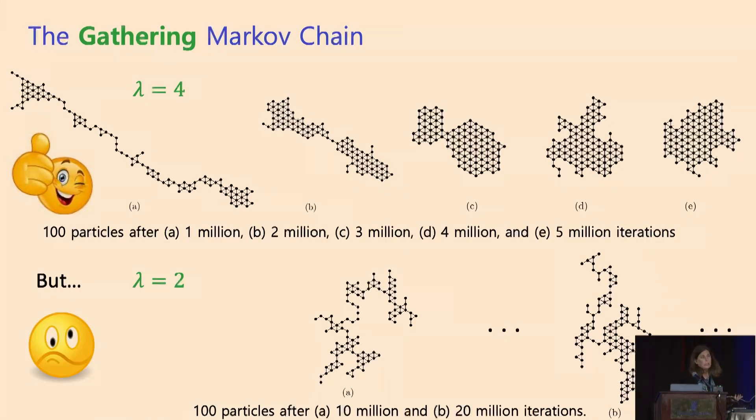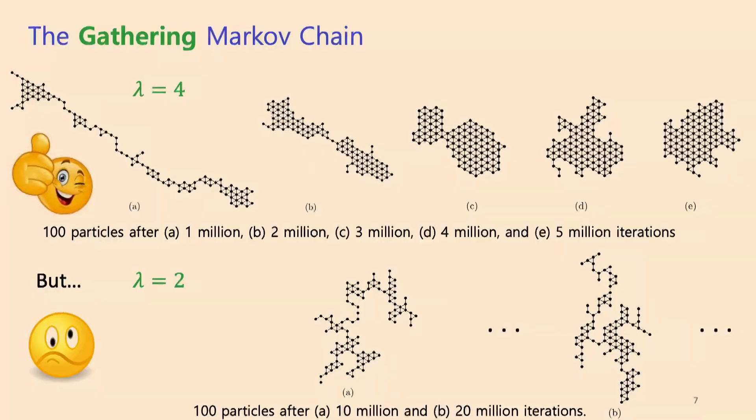If you choose lambda a little bit smaller, if you choose it to be two, you go 10 million, 20 million, and you keep going forever, this is never going to compress. So there's a difference.